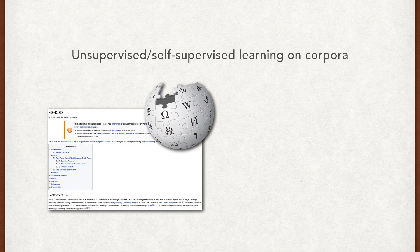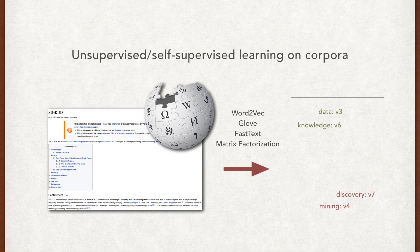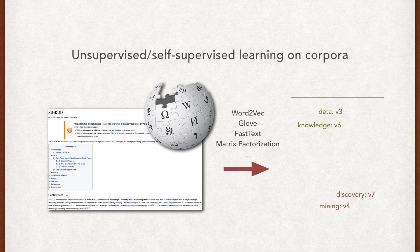There are various successful approaches, for example, word2vec, GloVe, fastText, and matrix factorizations. Word embedding has tremendous influences on natural language processing.